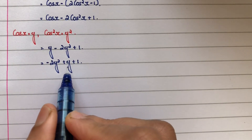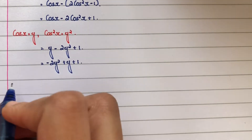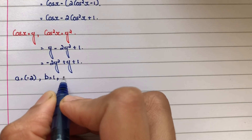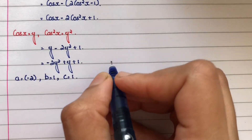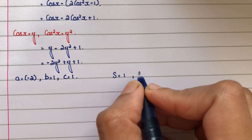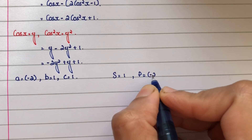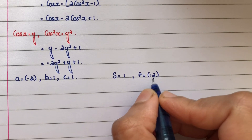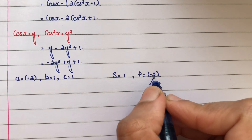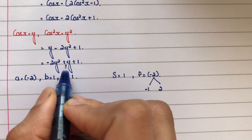This is a degree 2 quadratic equation, so we use middle term breaking to factor it. Here a equals minus 2, b equals 1, and c equals 1. Sum equals b, that is 1, and product equals a into c, that is minus 2 into 1 equals minus 2. We split into minus 1 and 2, since minus 1 into 2 is minus 2 and minus 1 plus 2 is 1.